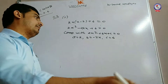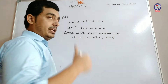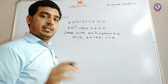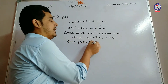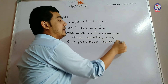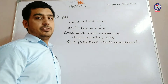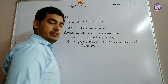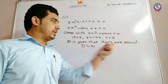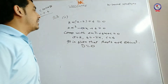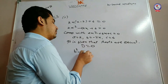जब हमारे पास यह values आ गई हैं, तो हम आगे करते हैं कि हमें condition दिया है कि equal roots होने चाहिए। So it is given that roots are equal. Equal roots की situation में D is equal to zero होता है। D की value के लिए हम रखते हैं: b squared minus 4ac is equal to zero.